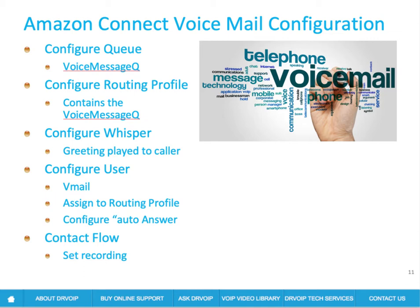So here are the steps. First, you're going to configure a queue — let's call that queue something creative, like voicemail queue. Next, you're going to create a routing profile, and you're going to put that queue in the routing profile, so this is a routing profile that leads only to the voicemail queue. Then you're going to take the default whisper function, copy it, save as, and configure a whisper function for use as a voicemail greeting.